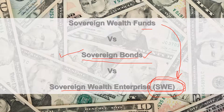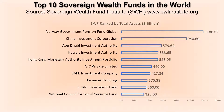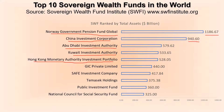Now let's take a look at the top 10 sovereign wealth funds of the world. At the top we have Norway's Government Pension Fund Global with about 1.1 trillion dollars worth of assets, followed by China Investment Corporation with about 940.6 billion dollars. Then Abu Dhabi Investment Authority at number three, Kuwait Investment Authority, Hong Kong Monetary Authority Investment Portfolio, GIC Private Limited, SAFE Investment Company, Temasek Holdings, Public Investment Fund, and at number 10, the National Council for Social Security Fund.